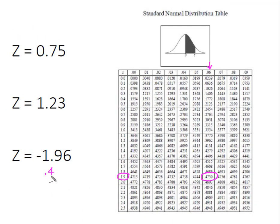So 47.5% of the data will fall between the mean and 1.96 standard deviations below the mean.